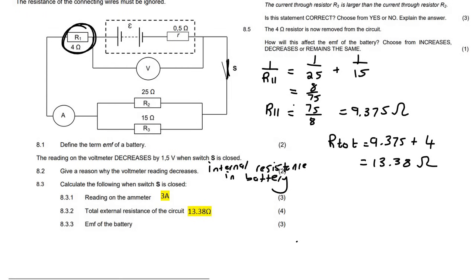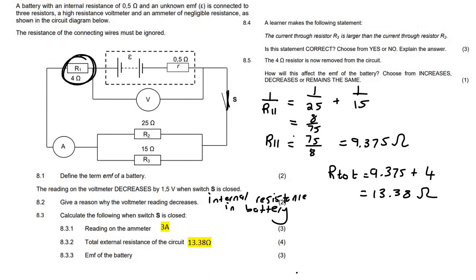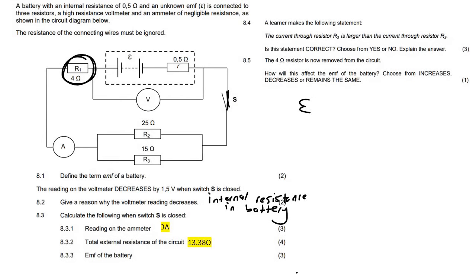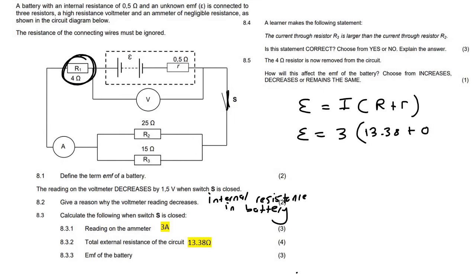The next question asks us to calculate the EMF of the battery. We have everything we need, so we use EMF equals I times (R plus r). The current is 3 amps, the external resistance is 13.38 ohms, and the internal resistor is 0.5 ohms. Working that all out gives us 41.64 volts.